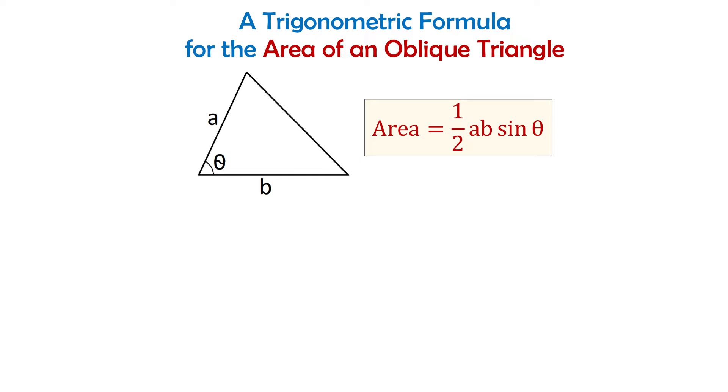Now let's see how we can show that the area of this triangle can be found using this formula. For this, from this point we will draw the height of this triangle and the height will be perpendicular to side b.